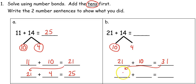I'll take the 31 and I'll add in my four ones. 31 plus 4 is 35. That means 21 plus 14 equals 35.